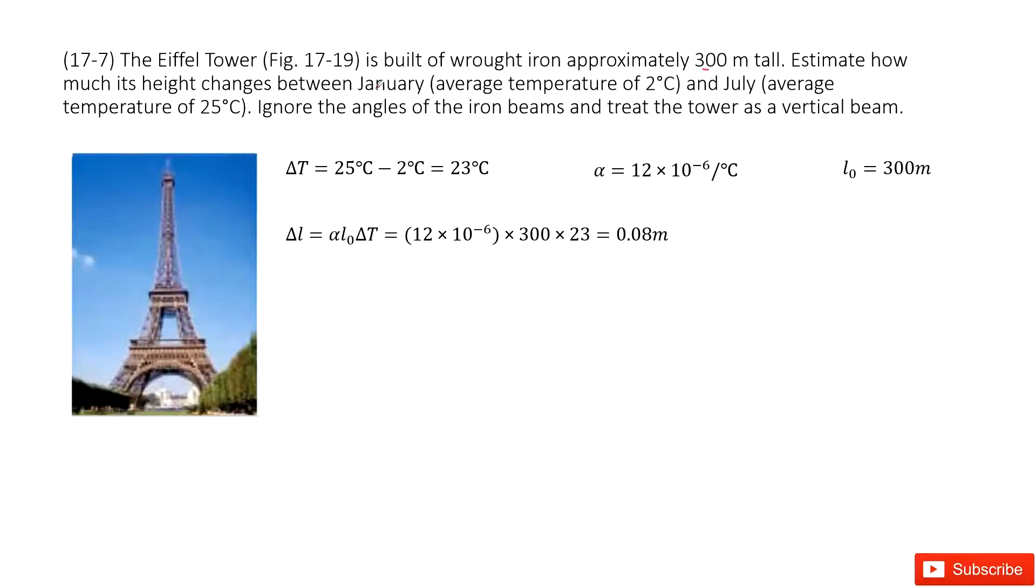Then we can find the temperature change from January to July. It's just 23 degrees. So this is the temperature in July, this is the temperature in January, and this is the change.